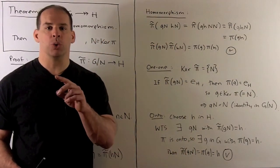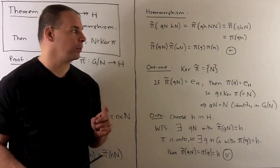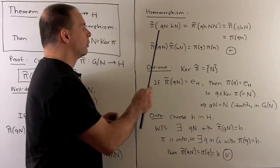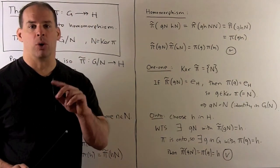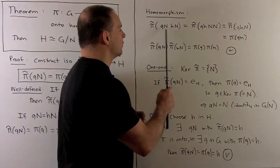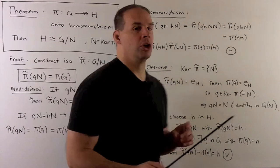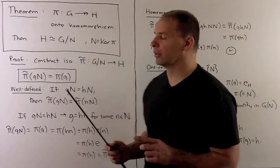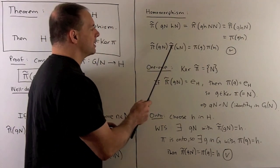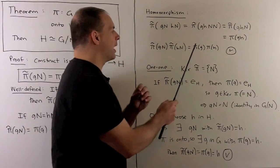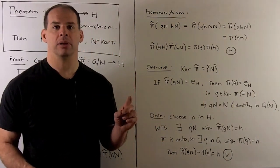That leaves the usual isomorphism properties. For the homomorphism property, take two cosets gN and hN, take their product, and apply pi-tilde. Because N is normal, the product is just (gh)N, and pi-tilde((gh)N) = pi(gh). On the other hand, pi-tilde(gN) times pi-tilde(hN) equals pi(g) times pi(h), and these two are equal by the homomorphism property of pi. So pi-tilde is a homomorphism.